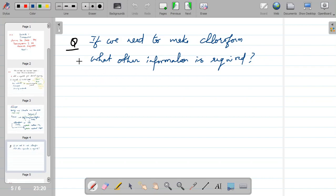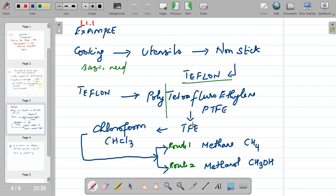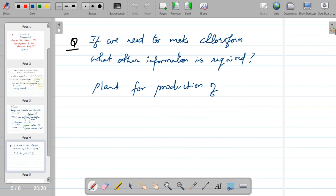But if you want to build a plant for production of, let's say chloroform, we can take any example in this chain, chloroform, TFE or PTFE, but I'm just taking one example for illustration. So if I want to construct, if I want to erect a plant for the production of chloroform, what will you look for? What are the information that you will look for?